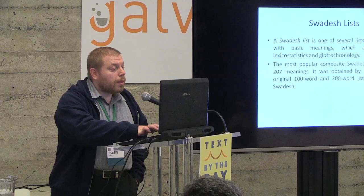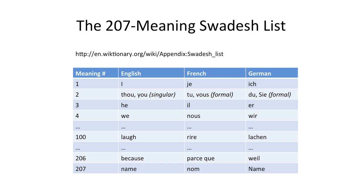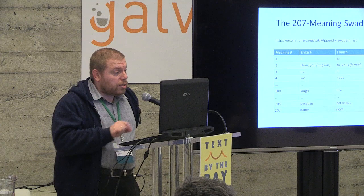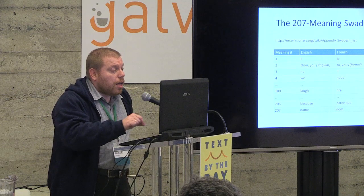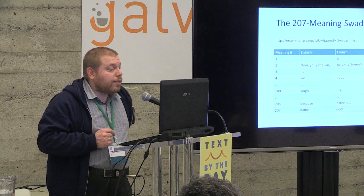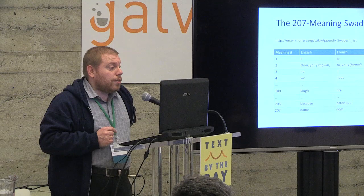This is just a sampling of the 207-meaning Swadish list obtained from Wiktionary. I separate 'thou' from 'you' in the subsequent processing, which makes it 208 instead of 207. There are meanings shown with corresponding words from English, French, and German — an interesting triangle because English is a Germanic language contaminated with some French.